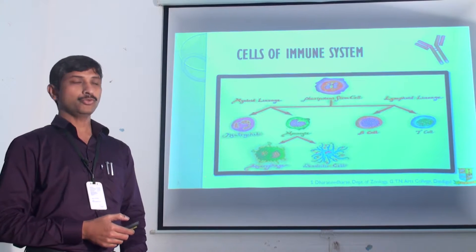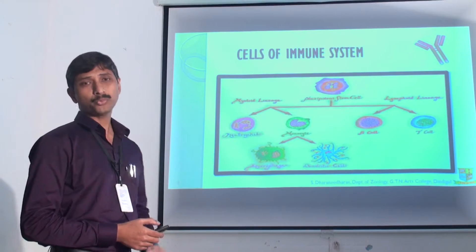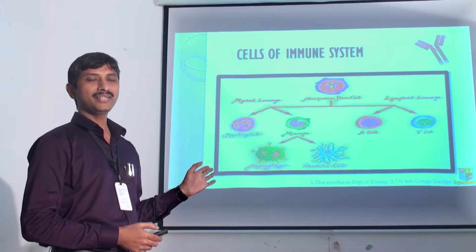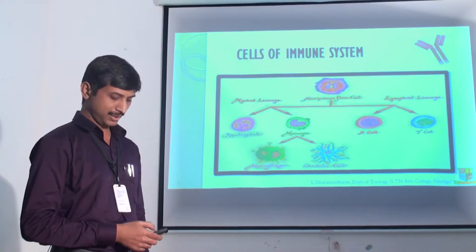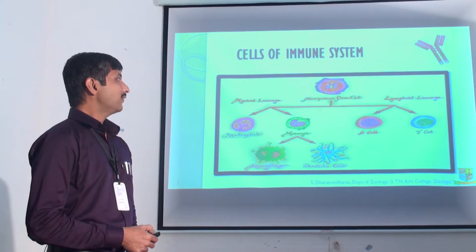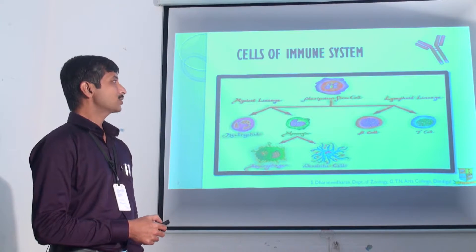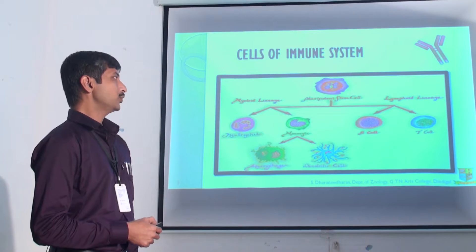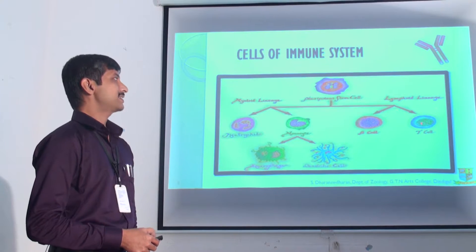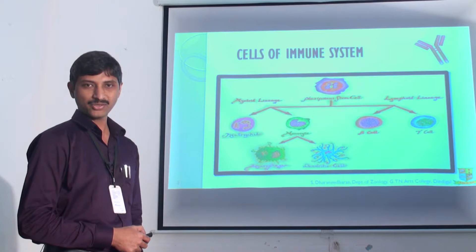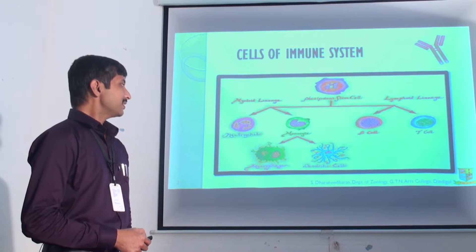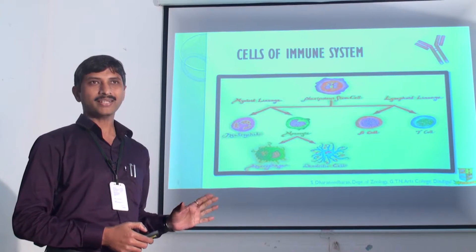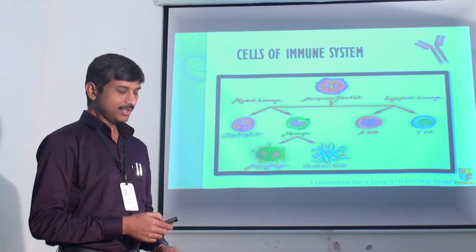The cells of the immune system start with the pluripotent stem cells, which divide into myeloid lineage and lymphoid lineage. Our target is the B cell. B cells and T cells — B from the bone marrow cells, T from the thymus gland. B cells produce the antibody, so our target for this technology is the B cell.